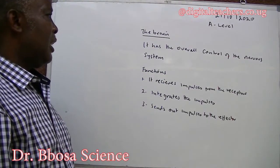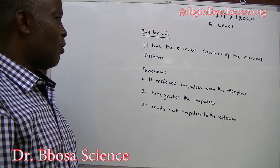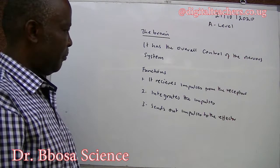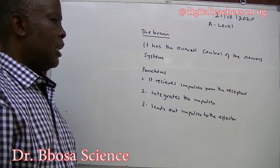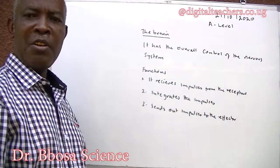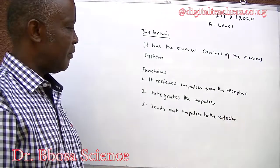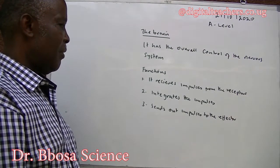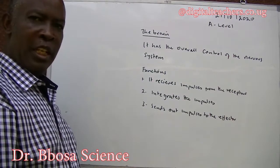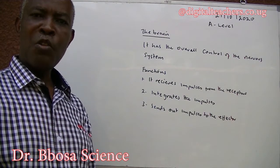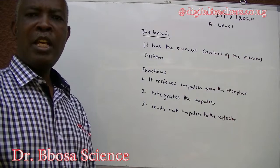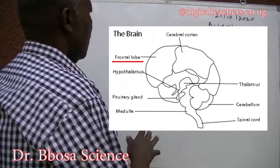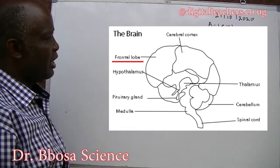The brain has overall control of the nervous system. Its functions include: it receives impulses from the receptors, integrates impulses, and sends out impulses to the appropriate effectors. The major parts of the brain include the following.